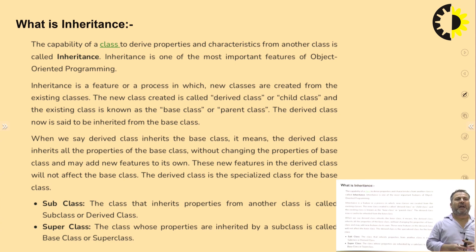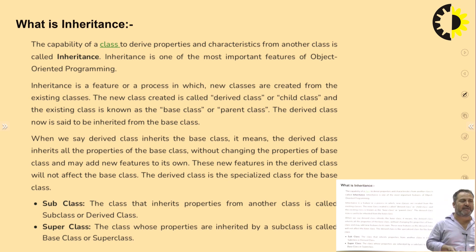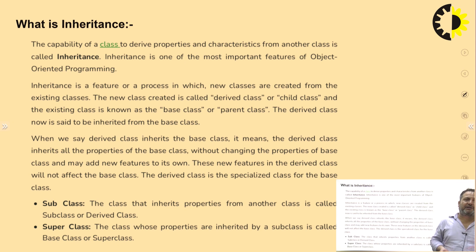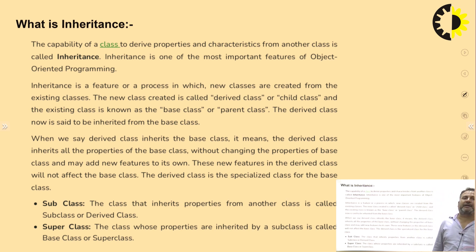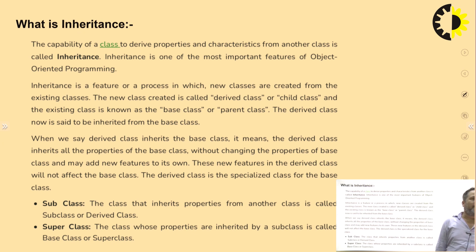A class will have only two things: data and functions. If the derived class inherits the base class, it is going to inherit the data and functions of the base class — ultimately that data or function becomes a member of the derived class. There is no need to create an object of the base class; by just creating the object of the derived class, we can access the data of both the derived class and the base class. The derived class inherits all the properties of the base class without changing them, and may also add new features of its own.